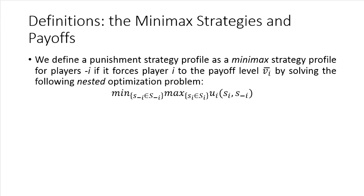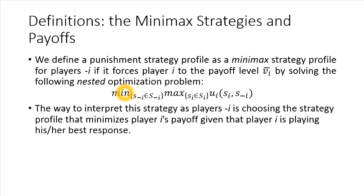You'll notice now the min and the max have flipped places. The inside optimization problem has player one choosing his strategy from his strategy space to maximize his own utility — that's the familiar problem that yields the best response function for player one. So we already know what the solution to the inside optimization problem looks like. The outside problem entails: given that player I is playing his best response, what strategy should the other players choose to minimize player I's payoff, given that player I is playing his utility-maximizing strategy through his best response.